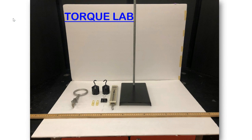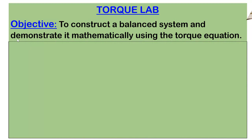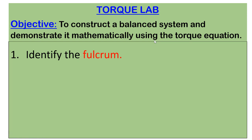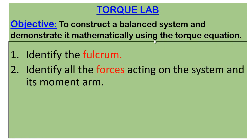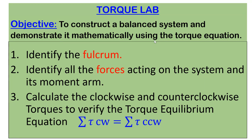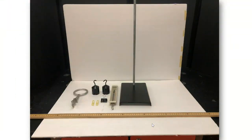This is the torque lab. The purpose of this video is to provide basic visual information on how to set up and complete the required torque lab for the pre-ACE physics class. The objective is to construct a balanced system and demonstrate mathematically using the torque equation. You will identify the fulcrum, all forces acting on the system and their moment arms, and calculate the clockwise and counterclockwise torques to verify the torque equilibrium equation, which states that the sum of all clockwise torques equals the sum of all counterclockwise torques.